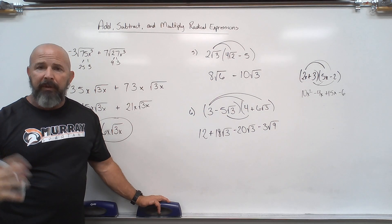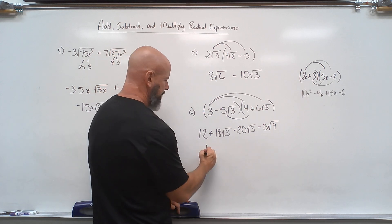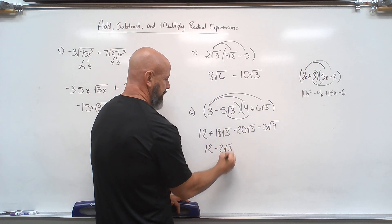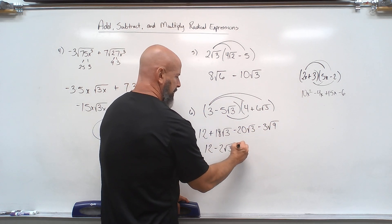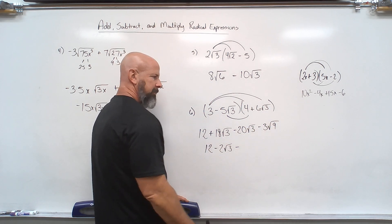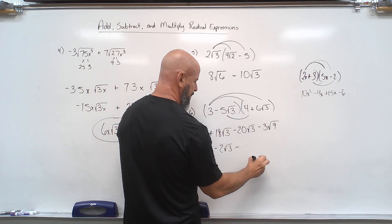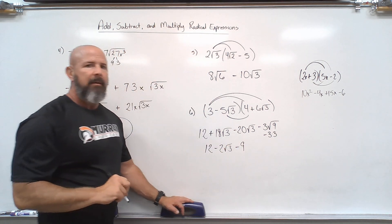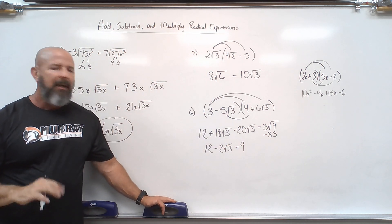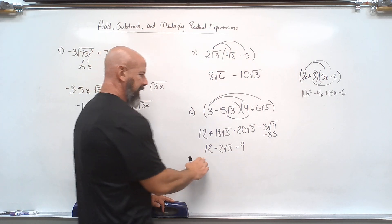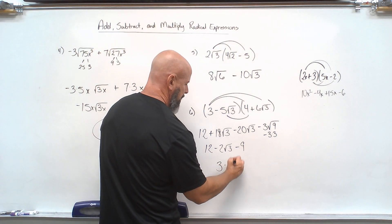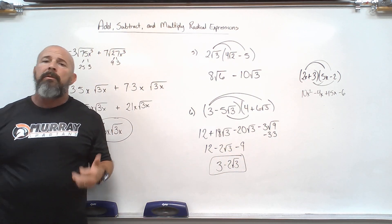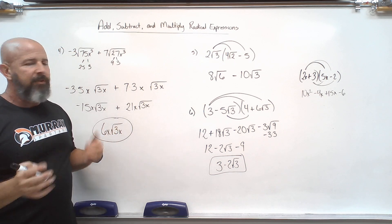Now we look for like terms or any simplifying we can do. We have 12, and then 18 root 3 minus 20 root 3, which combines to minus 2 root 3. Then the square root of 9 is 3, so that's negative 30 times 3 which is minus 9 in the end. That leaves us with 12 minus 9 equals 3, minus 2 root 3. Still just the distributive property with two binomials.